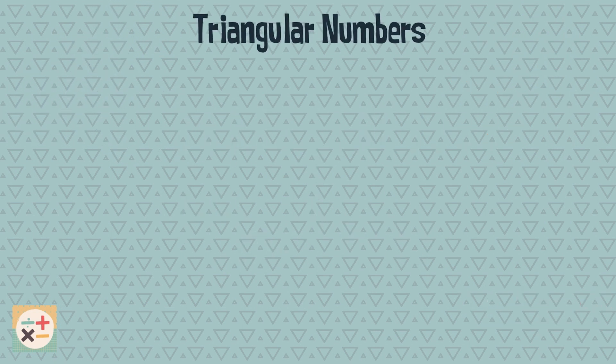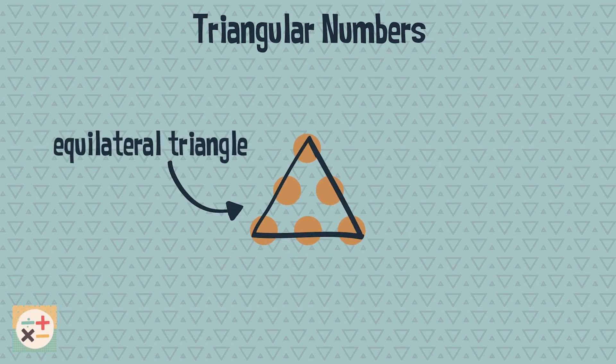So, what is a triangular number? A triangular number represents the number of objects that form an equilateral triangle.